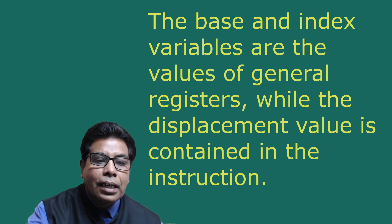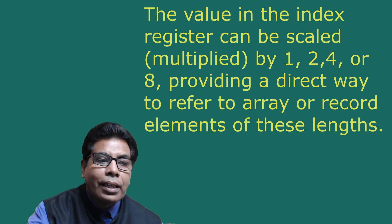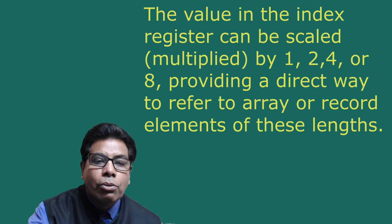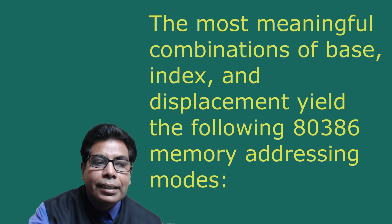Any or all of the base, index, and displacement variables can be used to compute an offset. The base and index variables are values of general registers, while the displacement value is contained in the instruction. Any general register can serve as a base or index register. The value in the index register can be scaled — that is, multiplied by 1, 2, 4, or 8 — providing a direct way to refer to an array or record of elements of those lengths. A displacement value can be 8 or 32 bits long and is interpreted by the processor as a signed two's complement value.